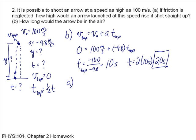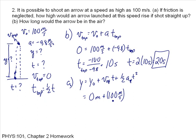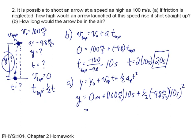Now if I want to know how high it goes, I calculate its Y displacement. Y equals Y-naught plus V-naught T plus one-half A T squared. The acceleration and initial velocity are already in the Y direction. Plugging in values: Y-naught is zero, plus 100 meters per second times 10 seconds, plus one-half times minus 9.8 — make sure you get the negative in there — times 10 seconds squared. That equals Y. Y equals 1,000 minus 4.9 times 100, which is 500 meters. That's five football fields.